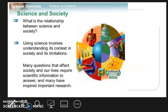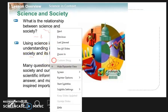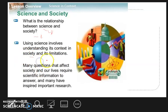Science and society. We will try to check the relationship between science and society. Science is an organized body of knowledge, and society is composed primarily of culture and social structure. Using science involves understanding its context in society and its limitations. Many questions that affect society and our lives require scientific information to answer, and many have inspired important research.